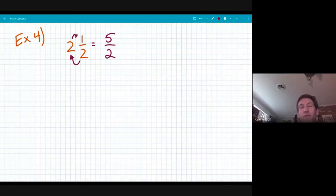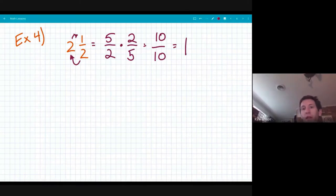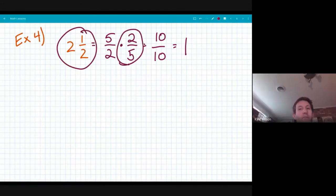So I would say, what's the reciprocal of two and a half. Well, I have to go to five over two first. And what would give me an answer or a product of one will be two fifths because five times two is 10 and two times five is 10 and 10 tenths equals one. So the reciprocal of two and a half is two fifths. You may want to pause and rewind that just to make sure that you're understanding this correctly.